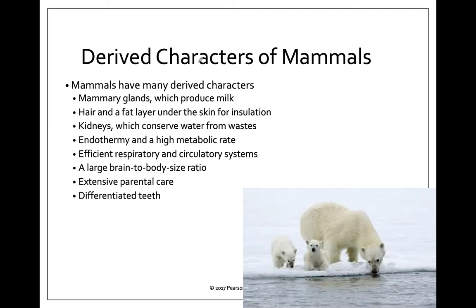There are many characteristics of mammals. Derived means that these are new and that all mammals have them. Some of these are not found anywhere else, so things like mammary glands and the production of milk, and hair, are not found in any other groups.